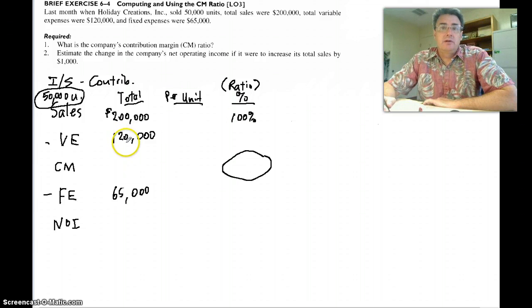So what are sales as a percentage of sales? It's always 100%. The variable expense percent, variable expense as a percent of sales. $120,000 divided by $200,000, I think that's 60%. I don't think I need to turn my calculator on for that.